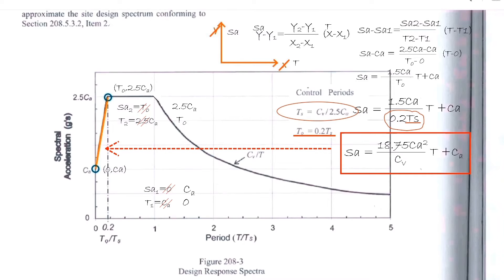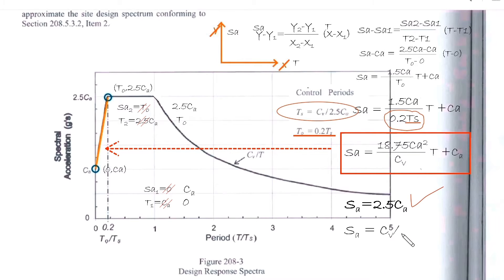So this is the equation for line 1. For line 2, we have SA equals 2.5CA. And for line 3, the curve, we have SA equals CB over T.